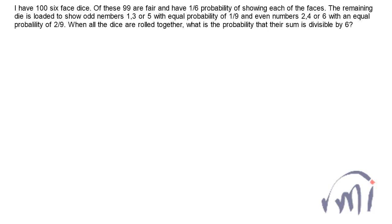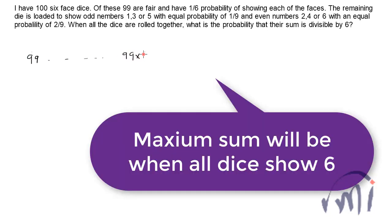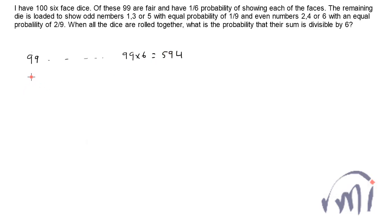So how to solve this problem? Let's first consider the 99 dice which are fair. When I roll all 99 dice, the least number I can get is 99 — that is when you get 1 on all the fair dice — and the maximum sum you can get will be 99 multiplied by 6, that is 594. Any of these sums can be represented in the form of 6x, 6x+1, 6x+2, 6x+3, 6x+4, or 6x+5.